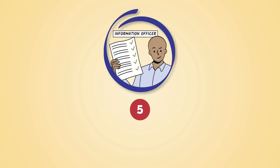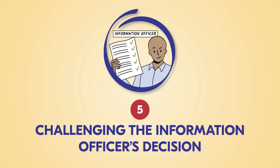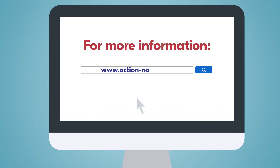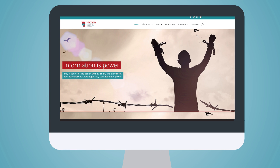If your request is denied, you have a right to challenge the information officer's decision — which is step five. The process for doing this is explained in the next video. To access more summarized information on the Access to Information Act, visit www.action-namibia.org.